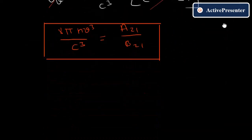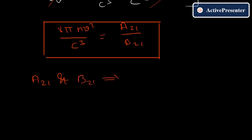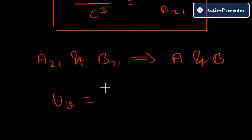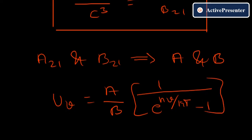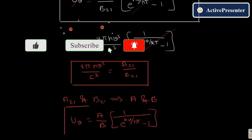This gives us the relationship between the Einstein coefficients A21 and B21. When written in simplified notation, dropping the subscripts: A/B = 8πhν³/c³. The final equation for energy density in terms of Einstein coefficients is: u(ν) = (A/B) · 1/(e^(hν/kT) − 1).